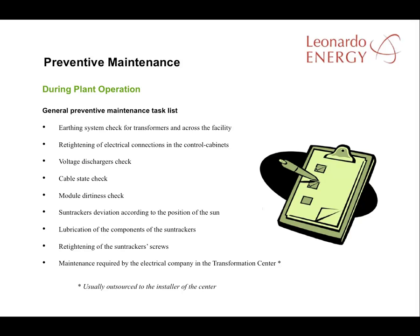In this slide, we can find a list of features that generally require preventive maintenance: a check on the earthing systems; tightening of electrical connections in control boxes or control rooms; a check of voltage dischargers and the state of cables; checking the dirtiness of modules and checks for the appearance of hot spots on those modules; verification that required maintenance by the electrical companies in the transformer centre has been completed; and if there are sun trackers, a check on their deviation from the optimal position in relation to the sun, and records of tightening and lubrication of moving components.